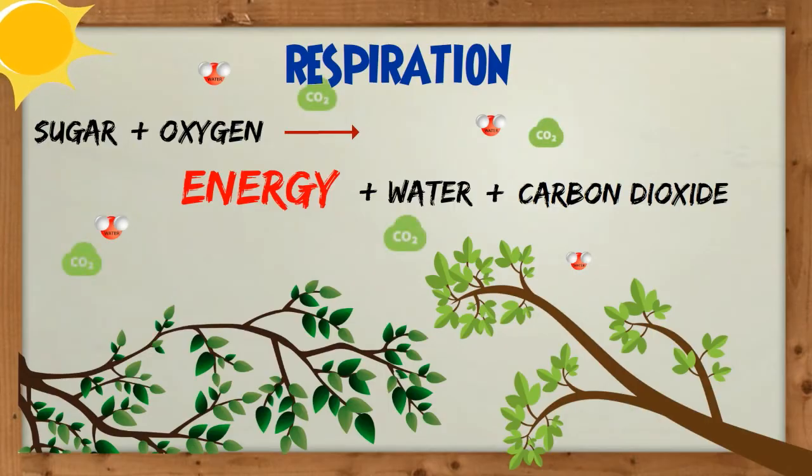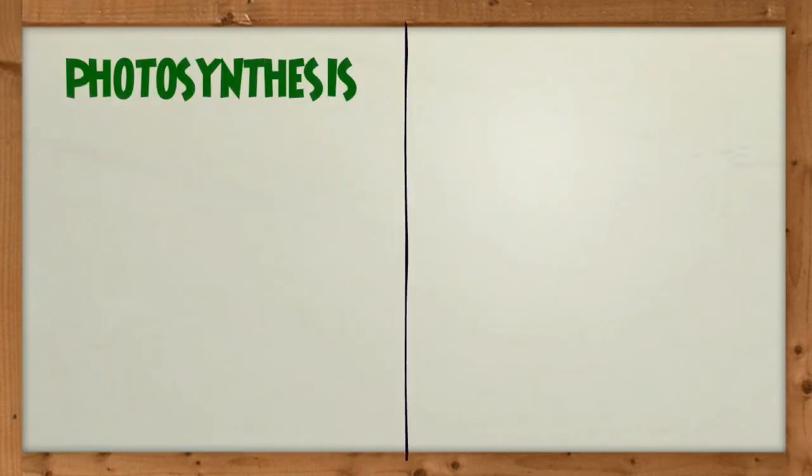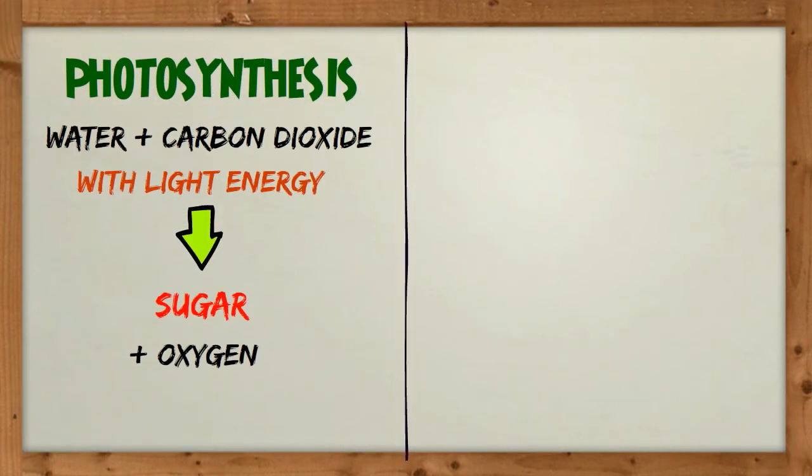Water vapor and carbon dioxide is released into the atmosphere through the stomata of the leaves. In essence, photosynthesis is the opposite of respiration.